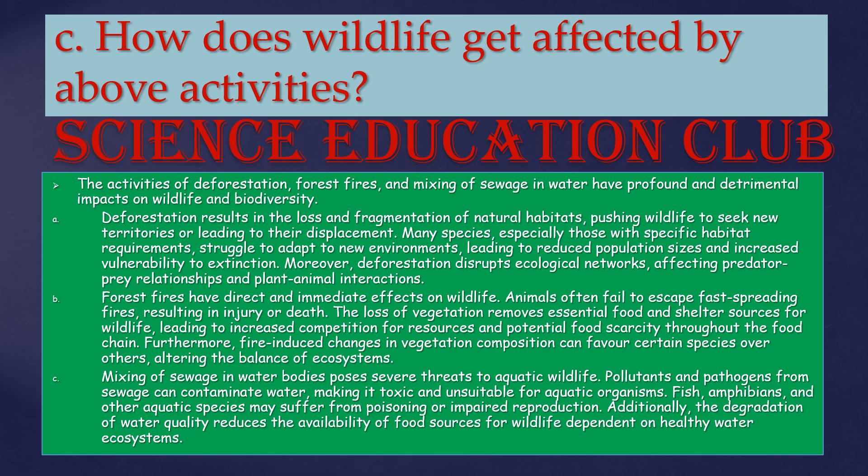How does wildlife get affected by the above activities? The activities of deforestation, forest fires, and mixing of sewage in water have profound and detrimental impacts on wildlife and biodiversity. Deforestation results in the loss and fragmentation of natural habitats, pushing wildlife to seek new territories or leading to their displacement. Many species, especially those with specific habitat requirements, struggle to adapt to new environments, leading to reduced population size and increased vulnerability to extinction.